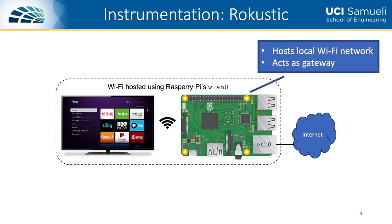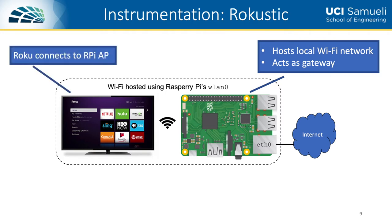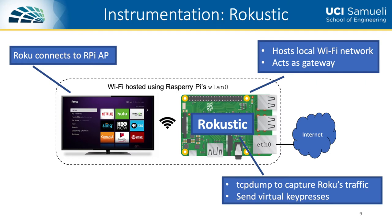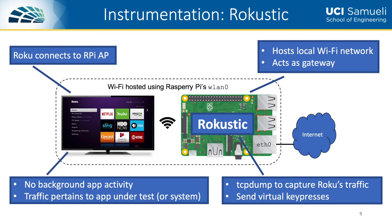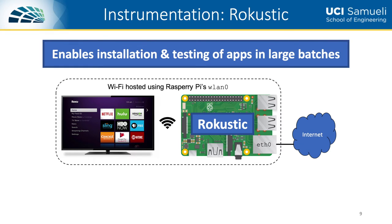We instrument the Roku platform by configuring a Raspberry Pi to host a wireless network. We connect our Roku to this wireless network and run our software Rokustik on the Raspberry Pi. Rokustik logs the Roku's traffic by running TCP dump on the Raspberry Pi's wireless network interface, and also automates interaction with Roku apps by sending virtual key presses to the Roku device. Since the Roku operating system does not allow apps to execute in the background, all traffic recorded during interaction with a specific app pertains to that app or the OS. This setup enables us to install and test apps in large batches — as many as 500 at a time.